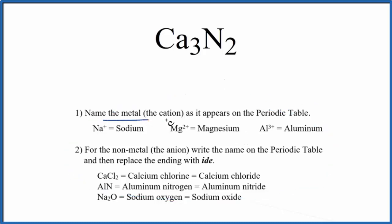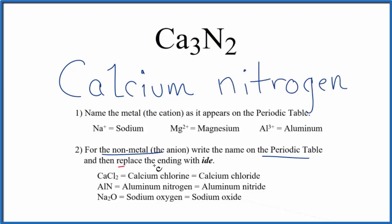First, we name the metal, that's the Ca, as it appears on the periodic table. So Ca, that's calcium. Next, we'll write the non-metal as it appears on the periodic table, the N, nitrogen. Start out the lowercase n, and we replace the ending with IDE. So all of this is replaced with IDE.